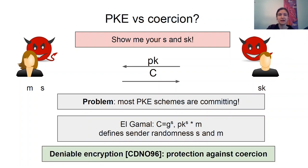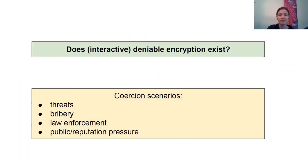To mitigate this kind of attacks, the notion of deniable encryption was introduced. The main purpose of this work is asking whether it's possible to communicate deniably, potentially with many rounds. Note that coercion attacks capture not just coercion per se — they are actually applicable in any scenario where parties have some incentive to disclose their true coins and plaintext, for example in a bribery case.